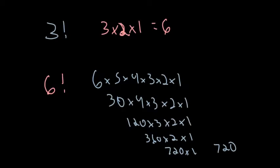So that's, you know, if you had six people for a picture, how many ways could they be arranged? 720 would be the answer.